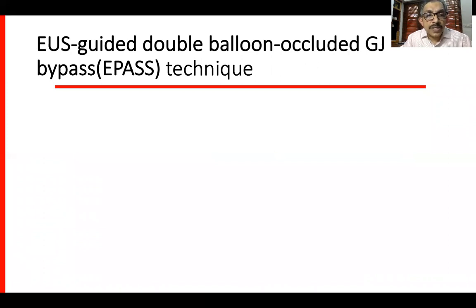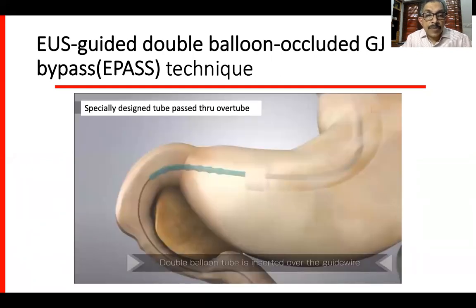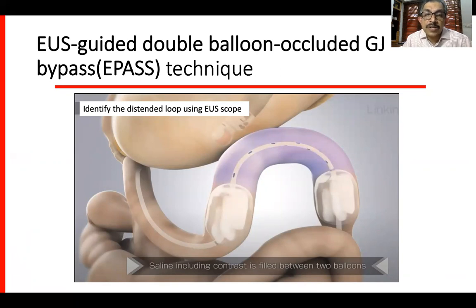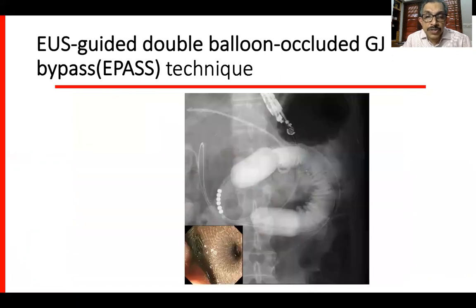The other procedure is the EUS-guided double balloon occluded gastrojejunostomy bypass technique, also called EPAS. Here, a specially designed tube is passed through an overtube over a guide wire into the proximal jejunum. Both balloons are distended and saline mixed with contrast and methylene blue is filled between the balloons. This distended loop is identified from the stomach using the EUS scope, then punctured and a LAMS is deployed.